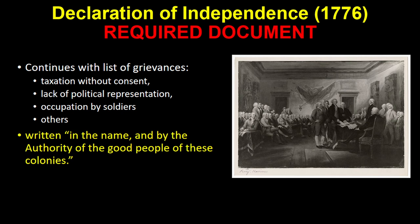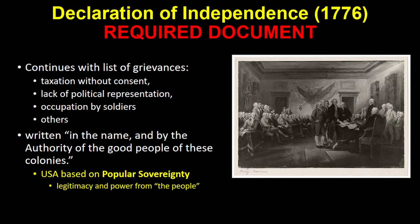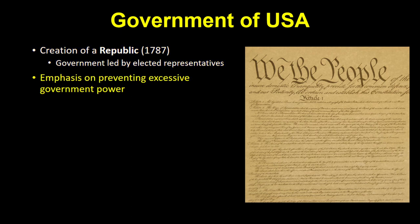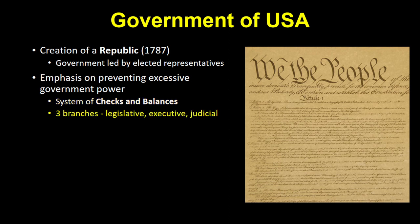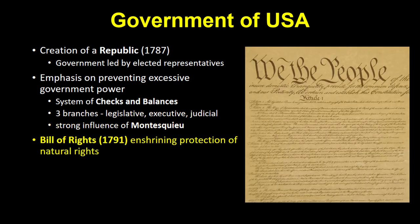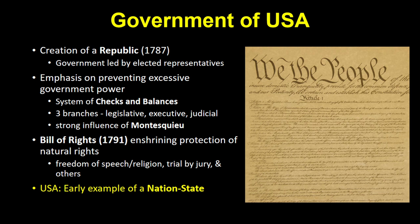The Declaration ends by stating it was written in the name and by the authority of the good people of these colonies — founding the USA on the ideal of popular sovereignty. Shortly after, American leaders wrote a constitution creating a republic, a government led by elected members representing the people. Special care was taken with checks and balances; the three-branch government of legislative, executive, and judicial was directly influenced by Montesquieu. A Bill of Rights was created to enshrine natural rights into law, including freedom of speech, freedom of religion, and the right to a trial by jury. The USA was an early example of a nation-state inspired by Enlightenment and democratic ideals.